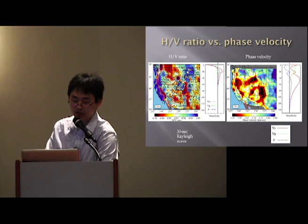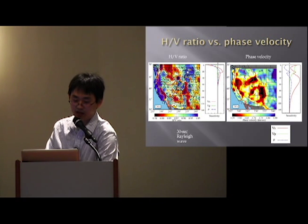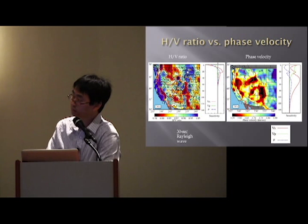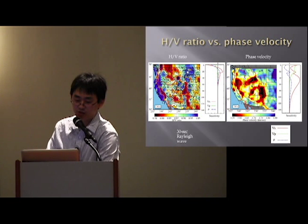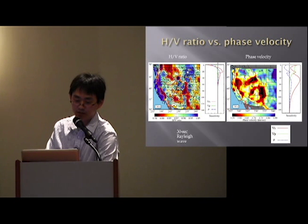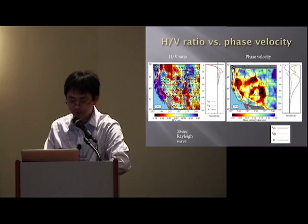In the H/V ratio map at 30 seconds, you can see that some high H/V ratio regions can be related to major sedimentary basins, such as the Williston Basin, Powell River Basin, Denver Basin, and Green River Basin — they all show up very nicely.